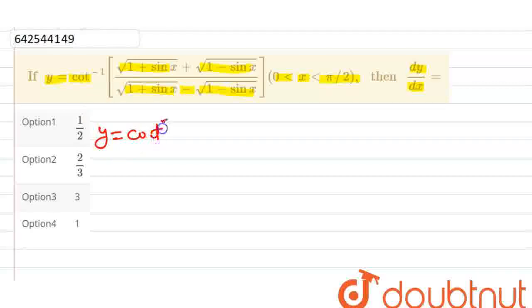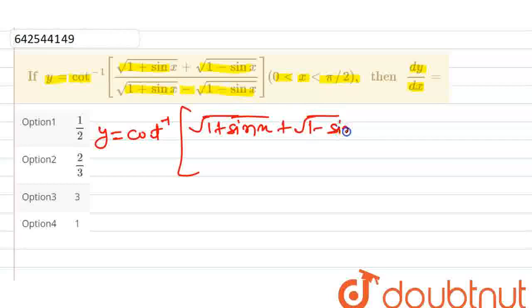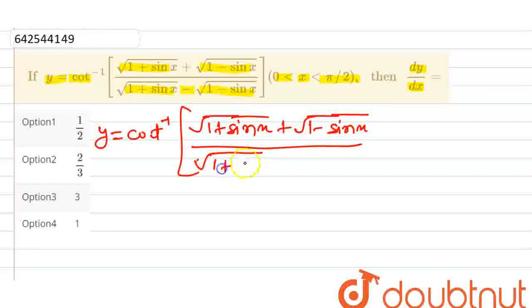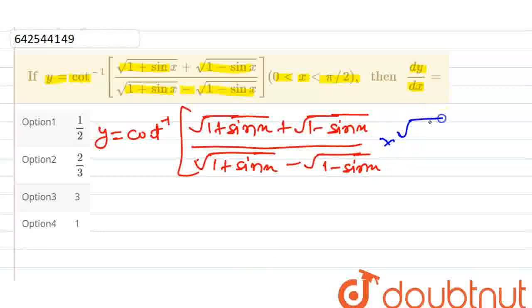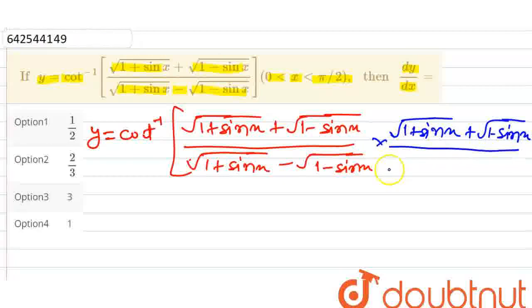Here we have y equal to cot inverse of [root(1+sinx) + root(1-sinx)] divided by [root(1+sinx) - root(1-sinx)]. So let us multiply and divide this by root(1+sinx) + root(1-sinx) in the numerator and denominator.